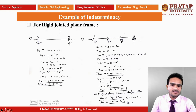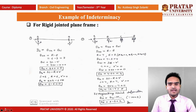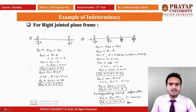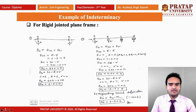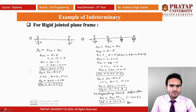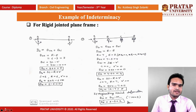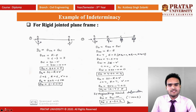The second example is a continuous beam with 3 members and 4 joints: A, B, C, and D. At A, this is a fixed support — 3 reactions are available: horizontal, vertical, and moment. At B, this is a pin support — only 2 reactions are available: vertical and horizontal. At C, this is a roller — only 1 vertical reaction is available. At D, also a roller — 1 vertical reaction is available.